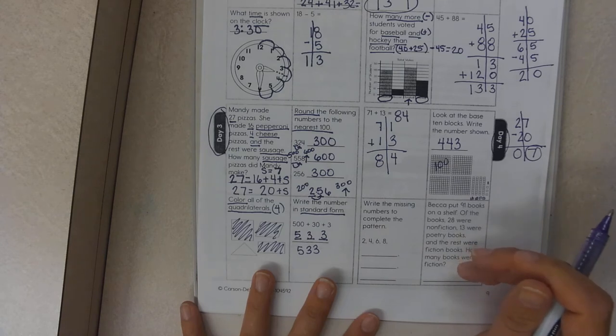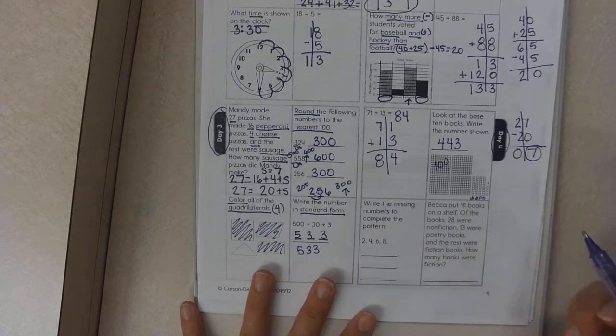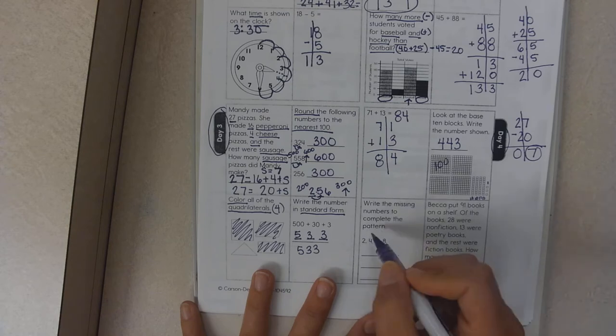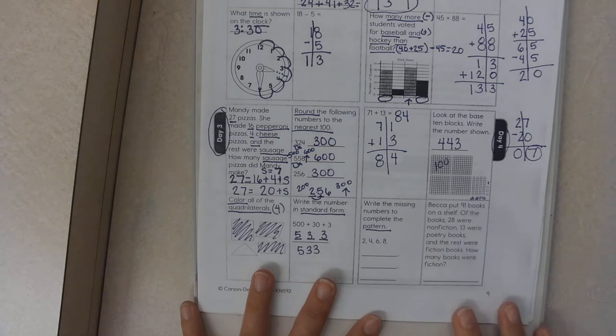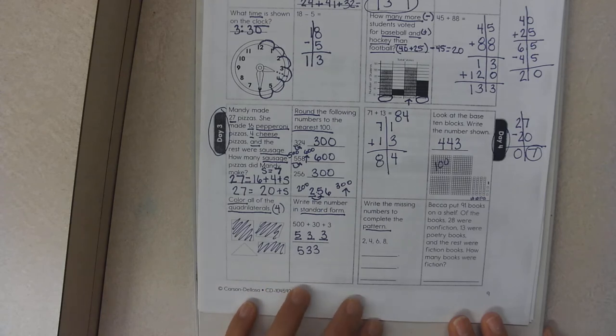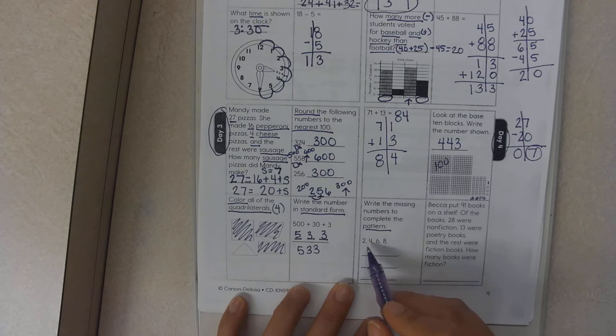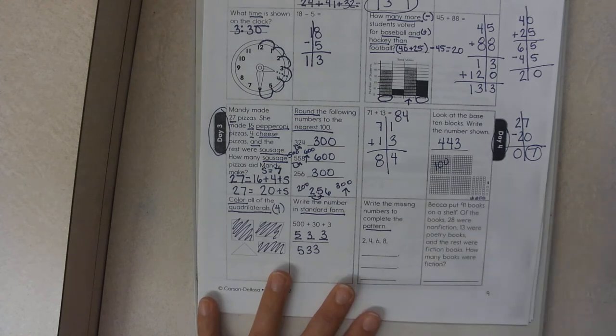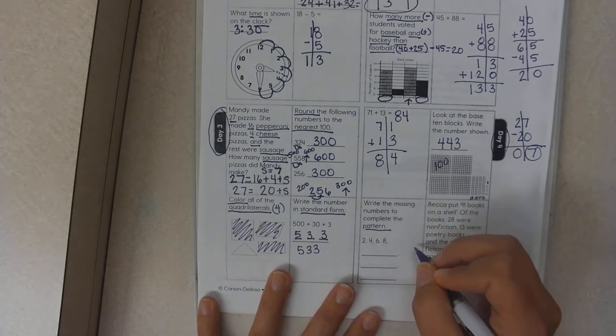Write the missing numbers to complete the pattern. Last week you were working on patterns in math. So if we go over this: two, four, six, eight. They are going up by a certain amount. They're moving up. I know that they're not going down.